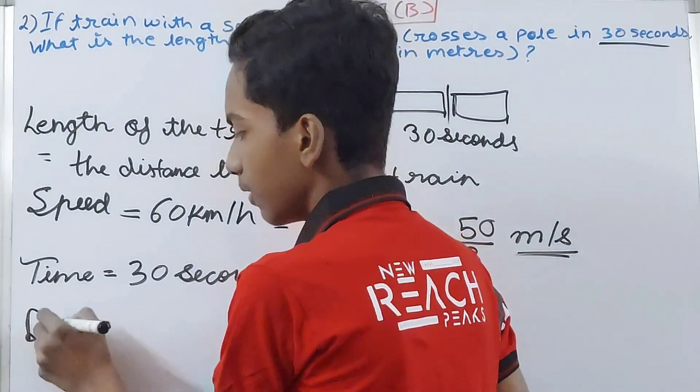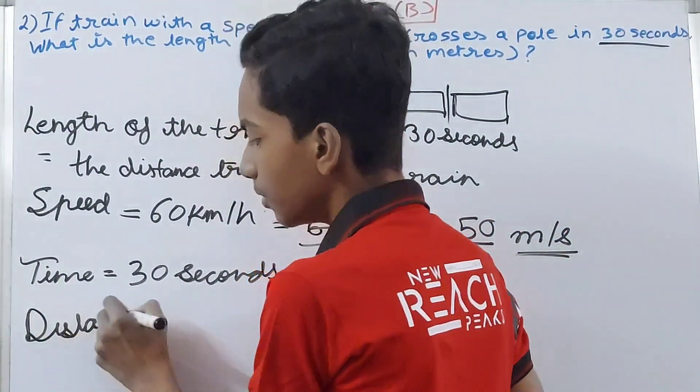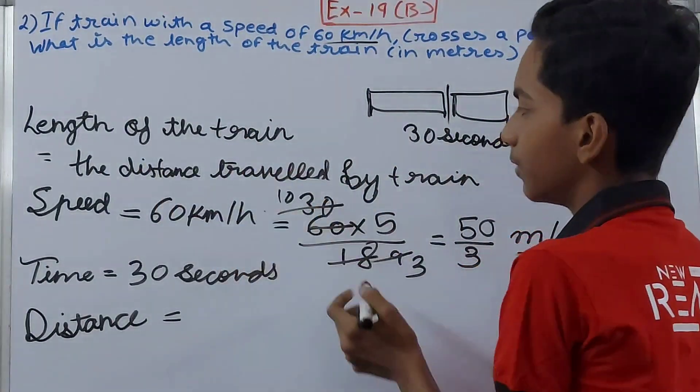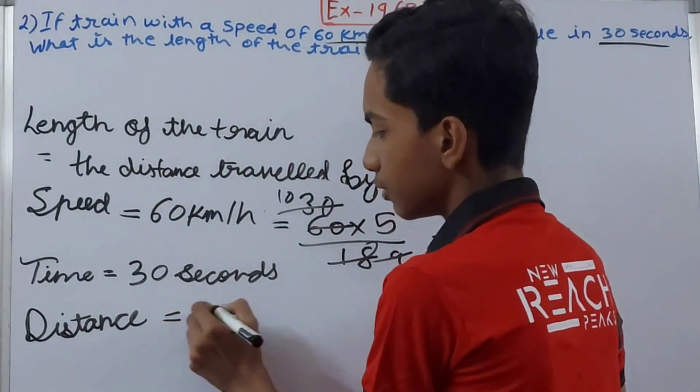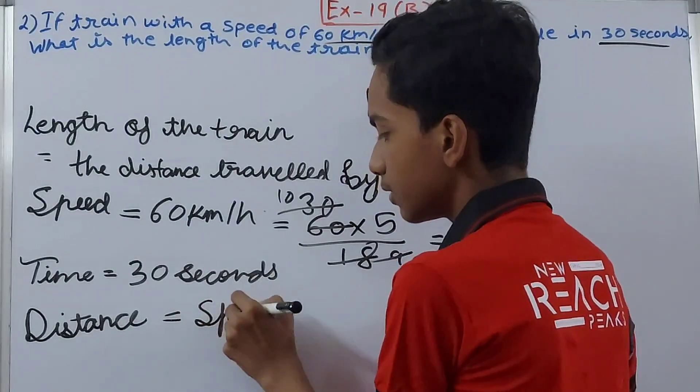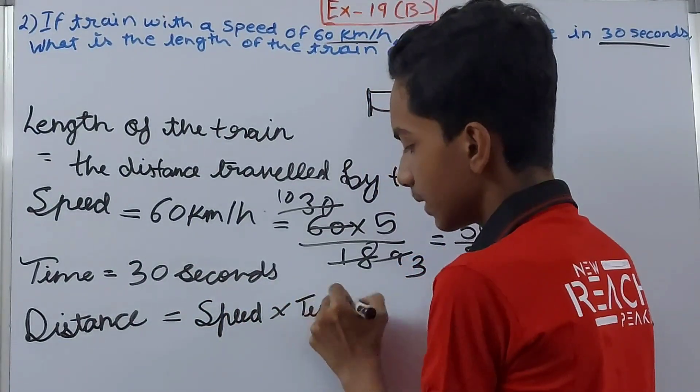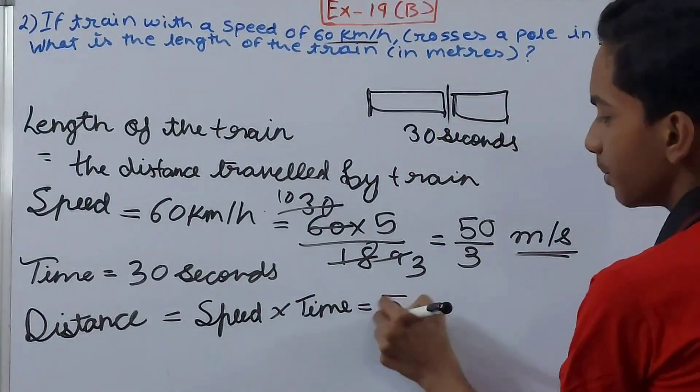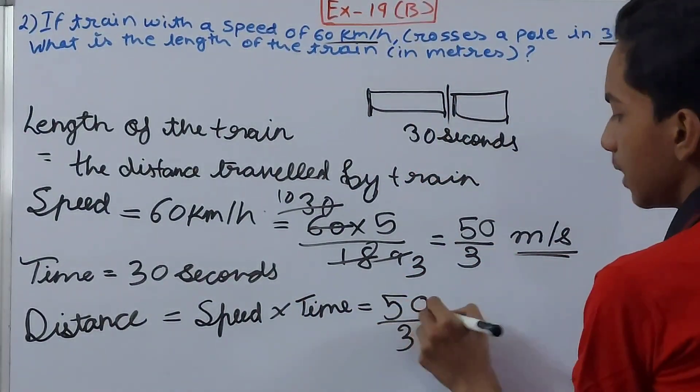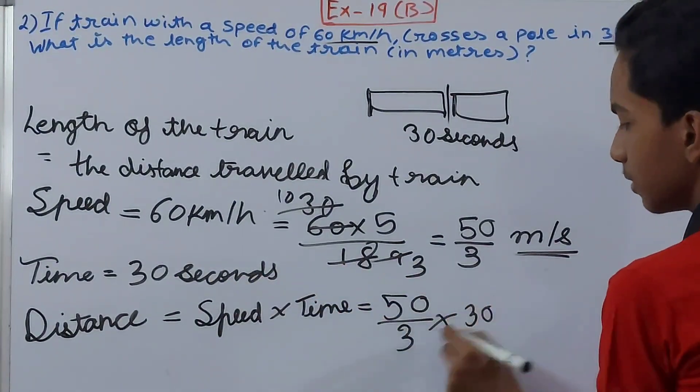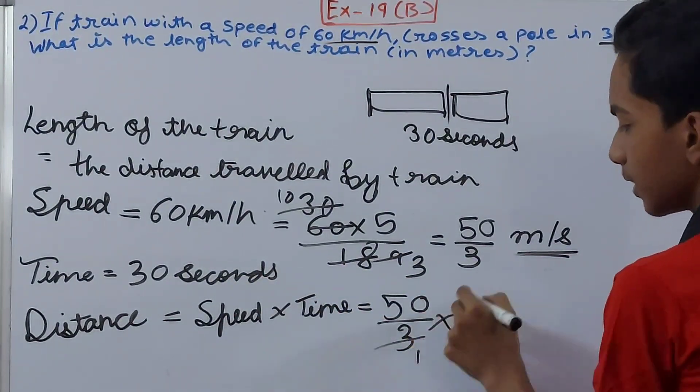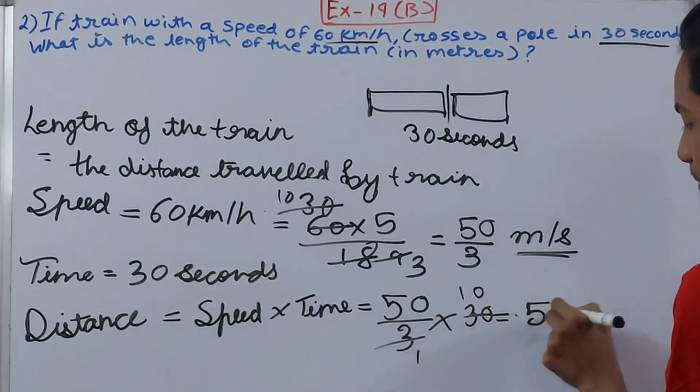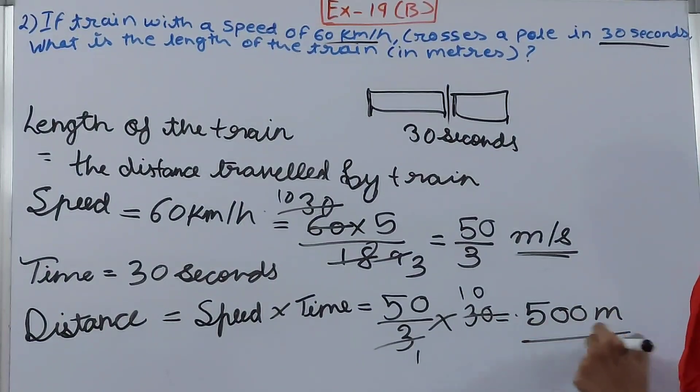Now we'll see the distance. This is the final step that we have to do because the distance traveled by the train equals the length of the train. So distance becomes speed into time. That gives us: speed is 50 by 3 meters per second into time, which is 30 seconds. So 3 and 30 cut each other - 1 and 10. So 50 into 10 becomes 500 meters.